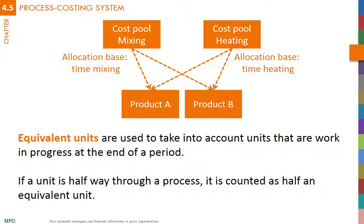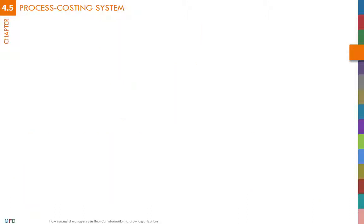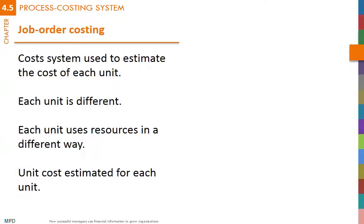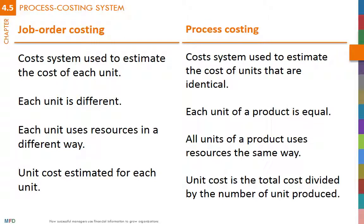A more refined cost system may use different equivalent units for different types of resources. For instance, if all material comes at the beginning of the process, a product that is halfway through the process will have a full equivalent unit of material but half an equivalent unit of labor, if labor comes in constantly through the process. Job order and process costing are designed for different environments. Job order is used when each unit is different, uses resources in a different way, and cost needs to be estimated for each individual unit. Process costing is used when units are identical, use resources in the same way, and the cost per unit is an average of total cost divided by number of units.